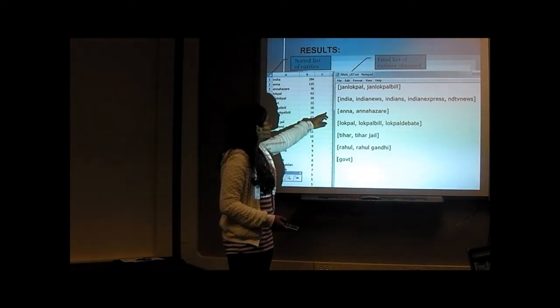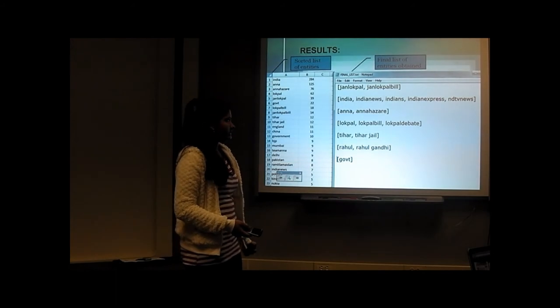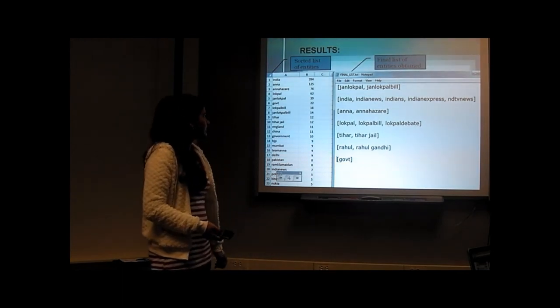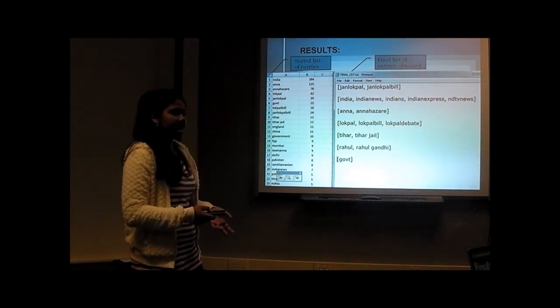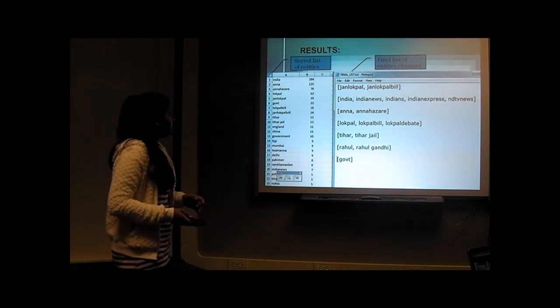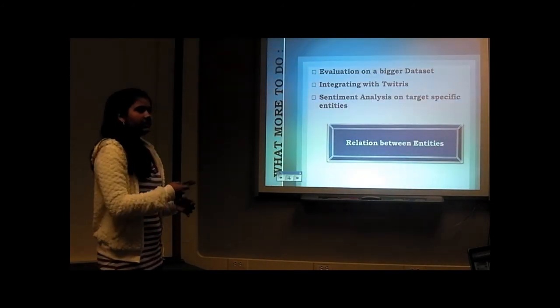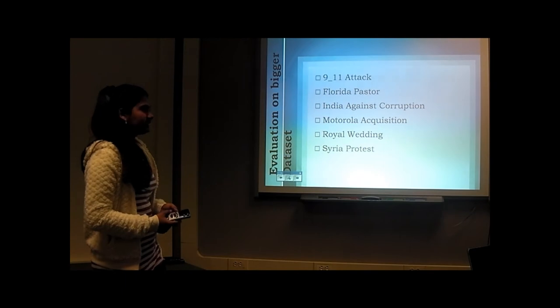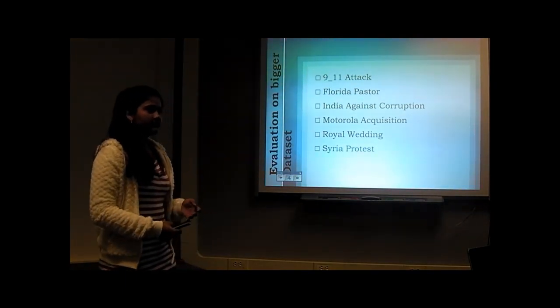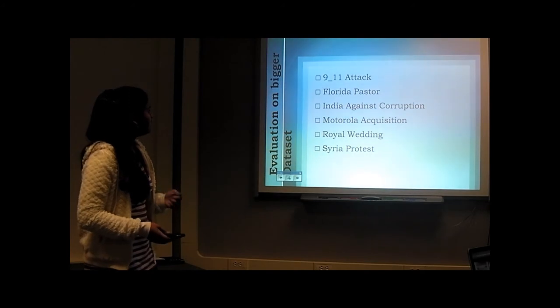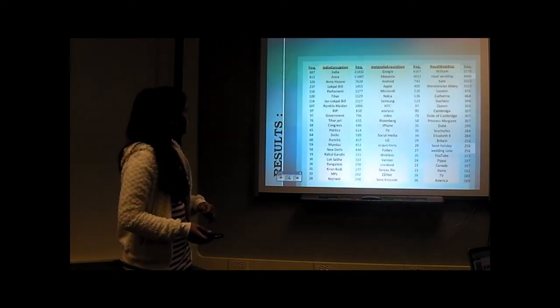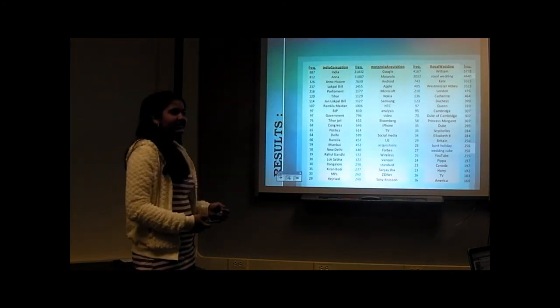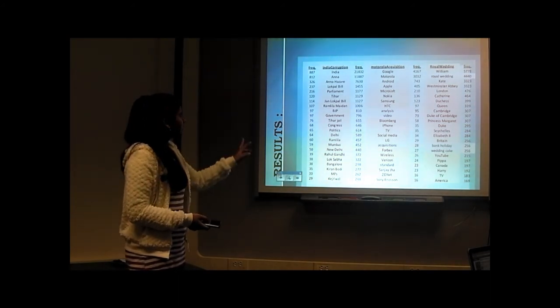So my final results were, these were the lists that I obtained based on the frequency, and my final list actually clubbed the things together. But you can see, I think this string similarity measure was not the, as you can see for the second result, it's not very good. But for the remaining, it actually clubbed the things together. So, my next step was to evaluate my entire code on a bigger dataset, and I did that for six different events, on the entire tweet corpus on these six events, and I obtained the results, which were pretty good, I think. I'm actually working on the evaluation part of all these three events.